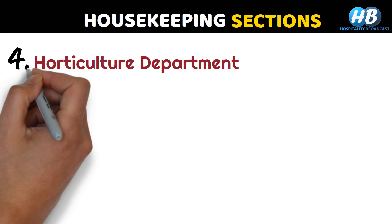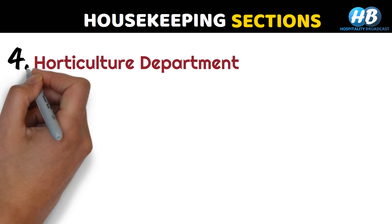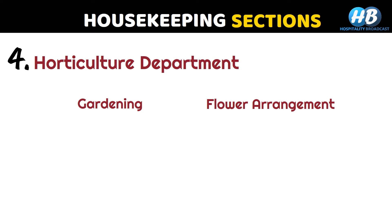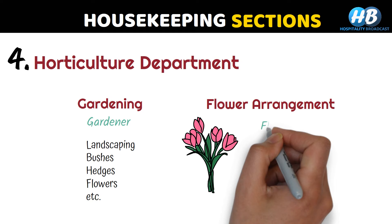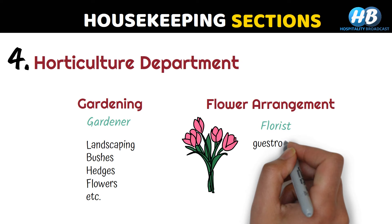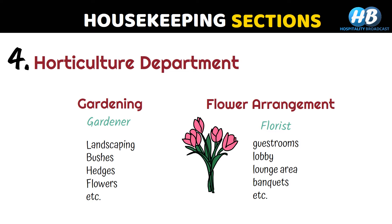Under the horticulture department, there are two key areas: gardening and flower arrangement. Gardening is handled by gardeners who are responsible for landscaping, bushes, flowers, etc. Flower arrangement is the responsibility of florists, who make arrangements in all areas of the hotel such as guest rooms, lobby, lounge, banquets, etc. There may be a separate flower room with work tables, a sink, and cupboards, or flower arrangement may be completely outsourced.